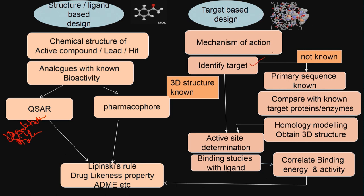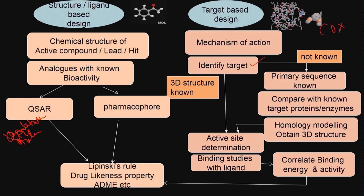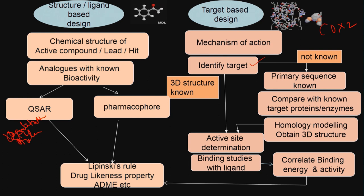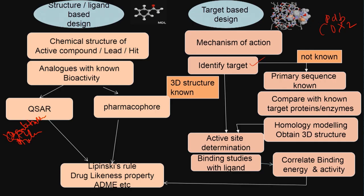Now, I may or may not know the 3D structure of the target. For example, if you take inflammation, there are enzymes like cyclooxygenase-2. Cyclooxygenase-2 needs to be inhibited to prevent certain inflammation. You may have the 3-dimensional structure of cyclooxygenase-2 for some mammals but not for humans. If the 3D structure is known, there is a database called PDB — Protein Data Bank — which contains 3-dimensional structures of a large number of proteins.